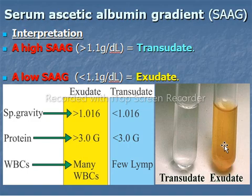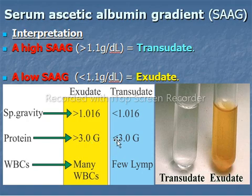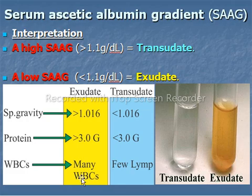The specific gravity of an exudate sample is greater than 1.016, while a transudate sample has a specific gravity less than 1.016. The protein of an exudate sample is greater than 3.0 g/dL, but a transudate sample has less than 3.0 g/dL. Transudate samples have few lymphocytes while exudate samples have many RBCs.